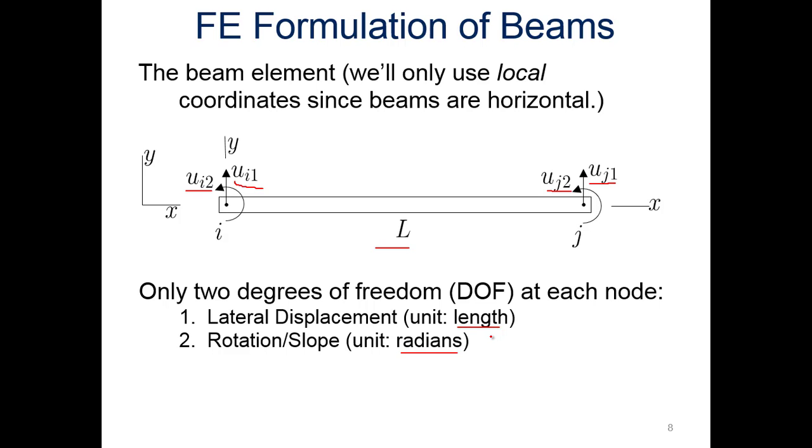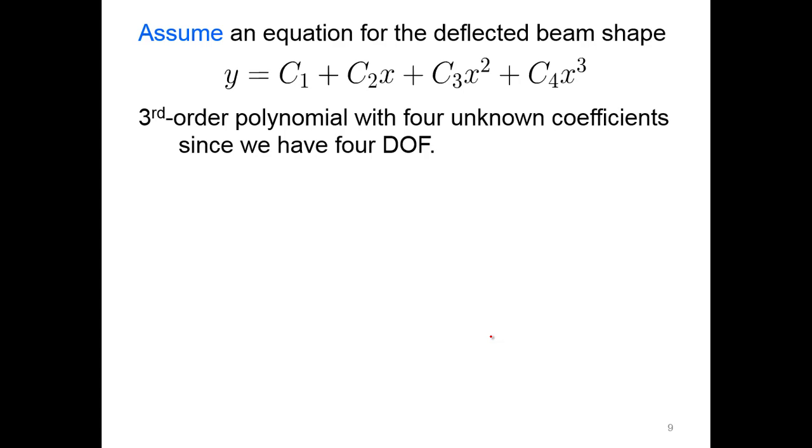For beams, just lateral displacement and rotation or slope, no axial displacement. We're not looking at that in this case. So what we're going to first do is assume an equation for the deflection, the deflected beam shape. The overall shape has kind of a curve for it, and in this case we're going to look at a third-order polynomial function where we have four different unknown coefficients.